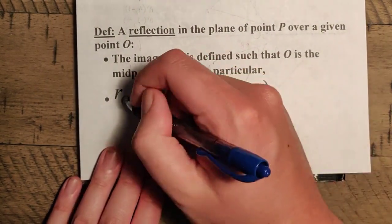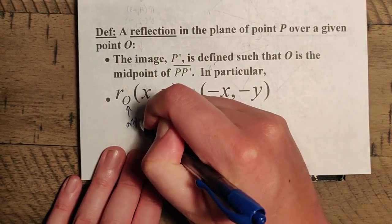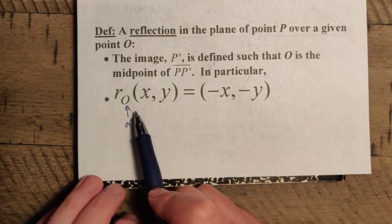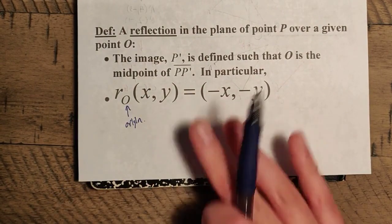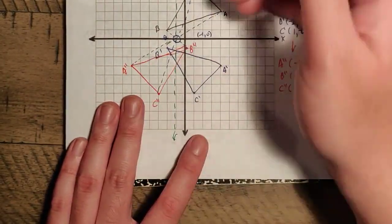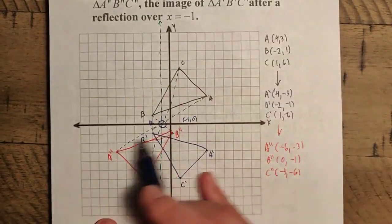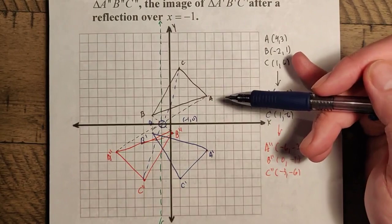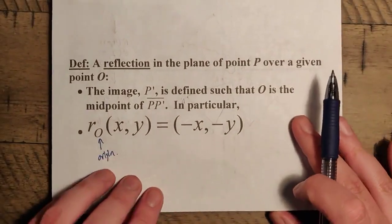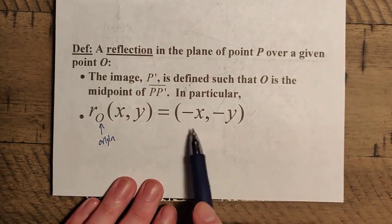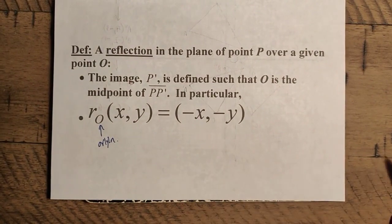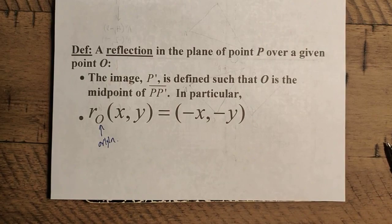For the special case of reflecting over the origin, written as R sub-O, we can think of it as the composition of a reflection over the x-axis and the y-axis, since (0, 0) is their intersection. Because the origin is the center, all coordinates get flipped, and we end up with negative x, negative y.